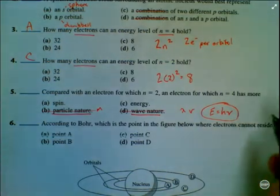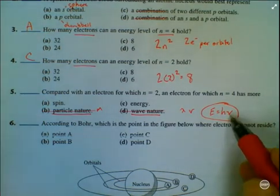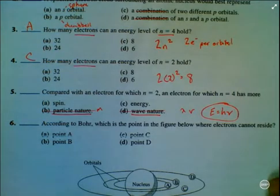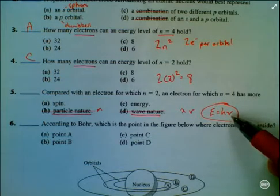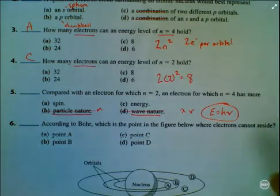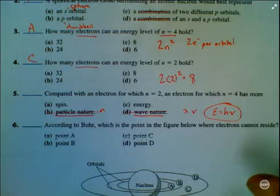And we haven't done this in this course, but if you know the frequency of a wave, you can calculate the wavelength of a wave. And so we can actually calculate, once we have the energy, we can calculate the frequency of an electron, and then we can calculate the wavelength of an electron. So all that to say, electrons are both particles and waves at the same time, to the same extent.